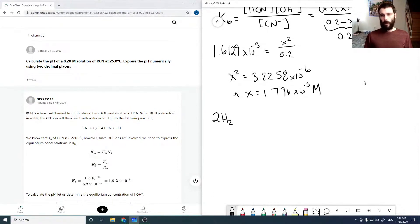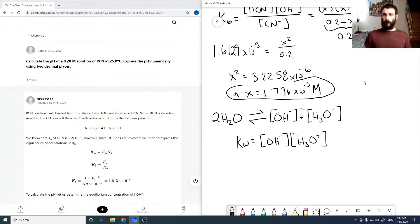Recalling that our Kw factor comes from this expression, where Kw equals our OH minus concentration times our H3O plus concentration. With our OH minus concentration, we can calculate our H3O plus.